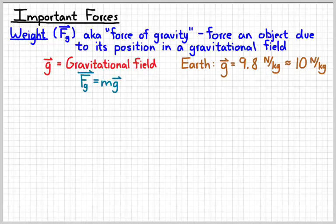To find the weight of something, we simply multiply the size of the gravitational field by the object's mass — M represents mass. The direction of weight is always directed downward. The Earth always pulls you down, something we kind of take for granted.